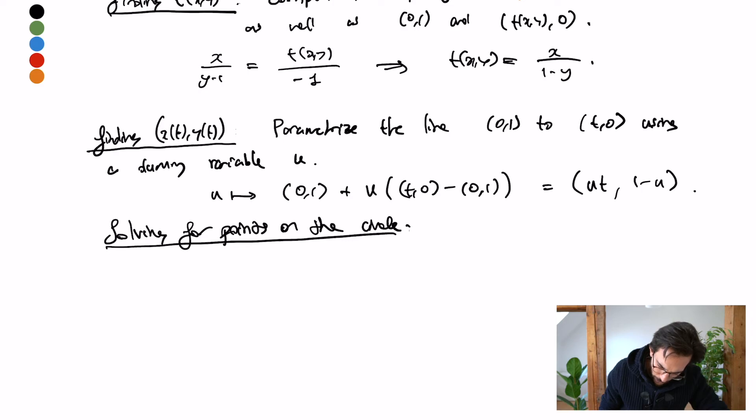This means I want (ut) squared plus (1 minus u) squared to be 1. Expanding out and collecting terms I'm going to get (t squared plus 1) times u squared minus 2u plus 1.